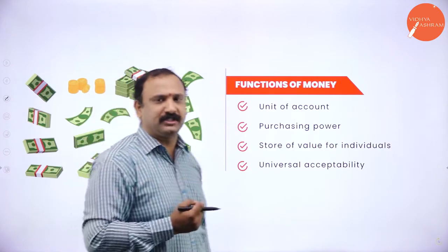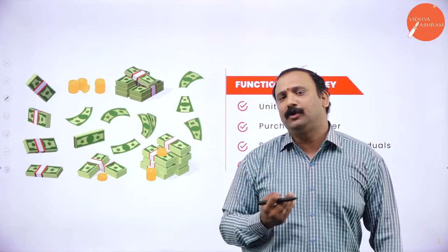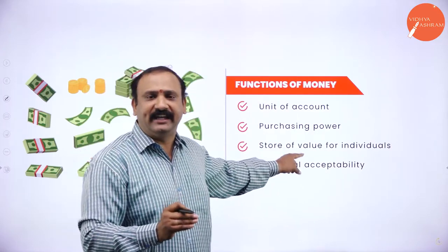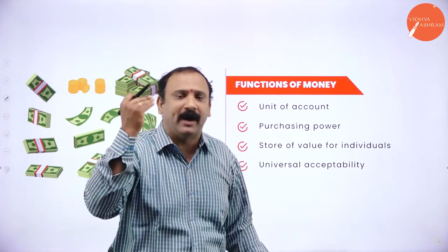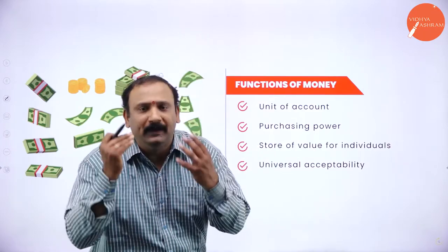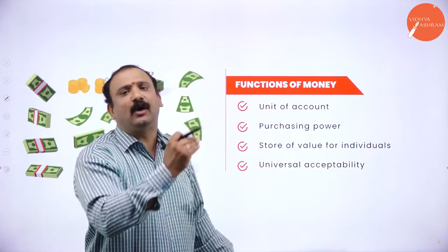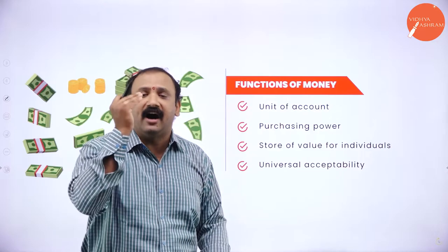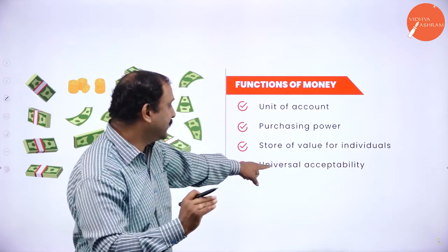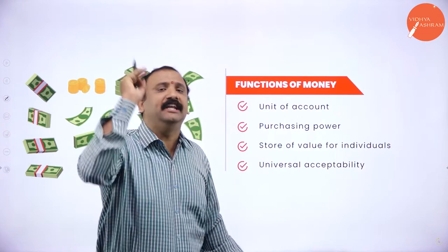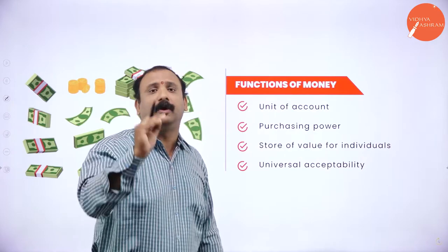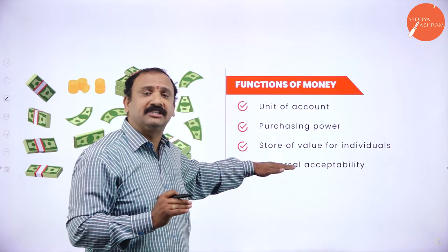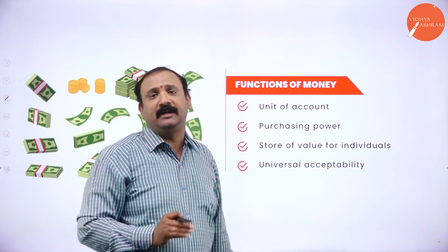The fourth function is universal acceptability. When you travel across the globe, people do not want to know your nationality, race, or class — they want to know what you carry with you. If you carry cash and the powers of money, you can travel across and buy whatever you want, becoming globally accepted. Dollar, euro, yen, rupees — you name the currency, they are accepted. Money talks in this world, and that is why universal acceptability is a very important concept in economics.